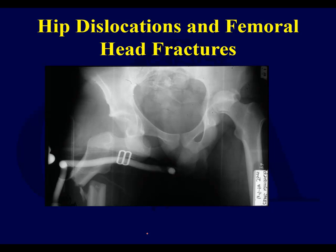Here you can see, just on this x-ray alone, quite a few injuries. You've got a hip dislocation bilaterally. Maybe there's an acetabulum fracture on the left as well, and maybe a sub-trochanteric femur fracture on the right. Very unusual picture, but obviously this is the stuff we're going to be talking about here.